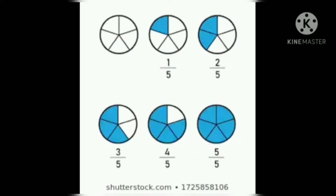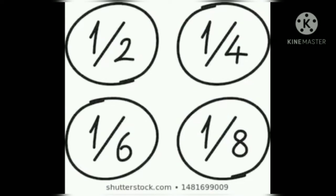In a circle with five equal parts — in the first picture one part is colored, so it is one out of five. In the second picture two parts are colored, represented as two by five. In the third picture three parts are colored, that is three by five. In the fourth one, four parts are colored out of five, that is four by five.